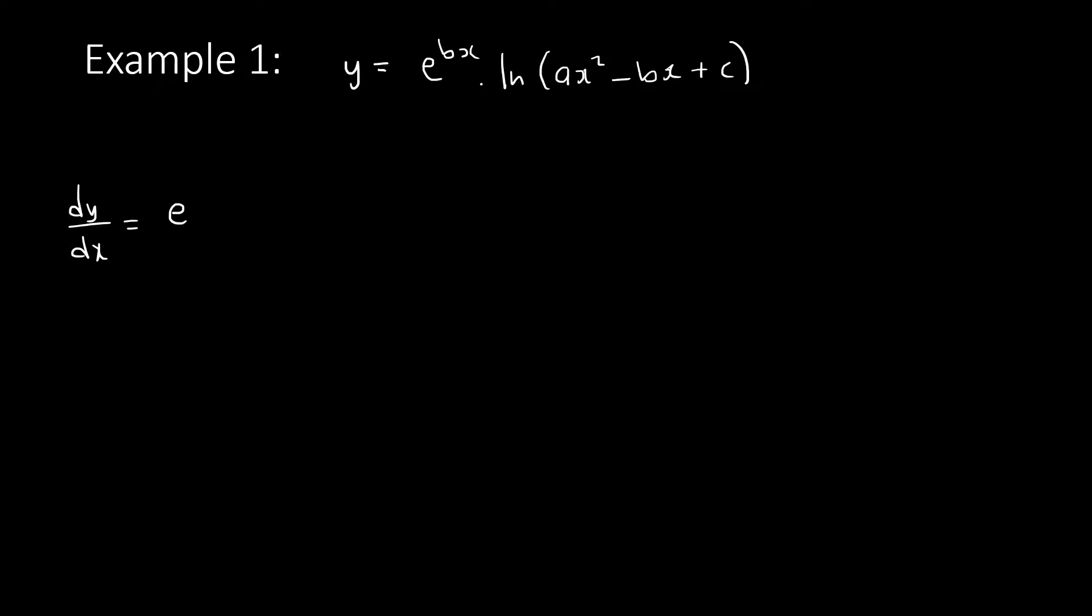The answer: first thing is u times v prime. If I derive v, I know I'll have one over everything there (ax² - bx + c), then times the derivative of inside. Remember it's chain rule - we started with ln, now we're going inside. The derivative of inside will be 2ax minus b.